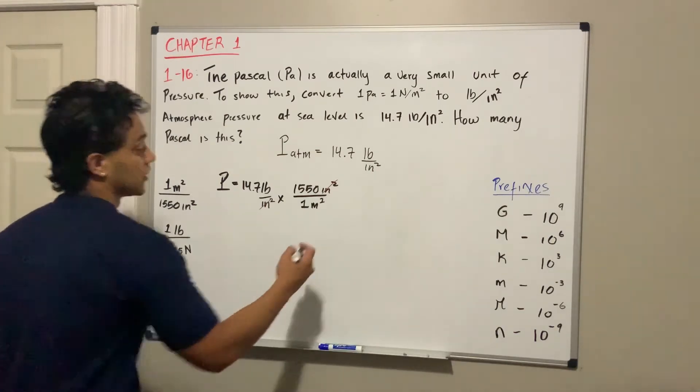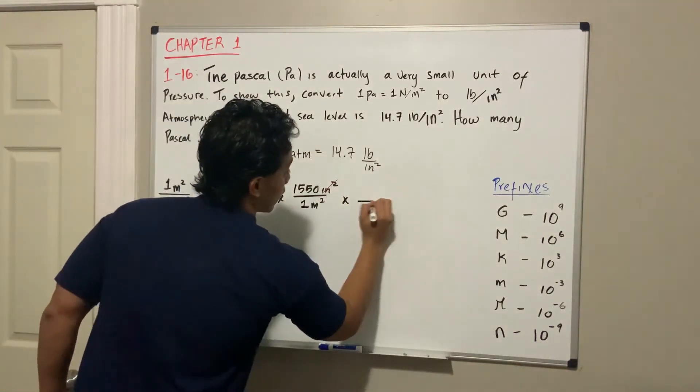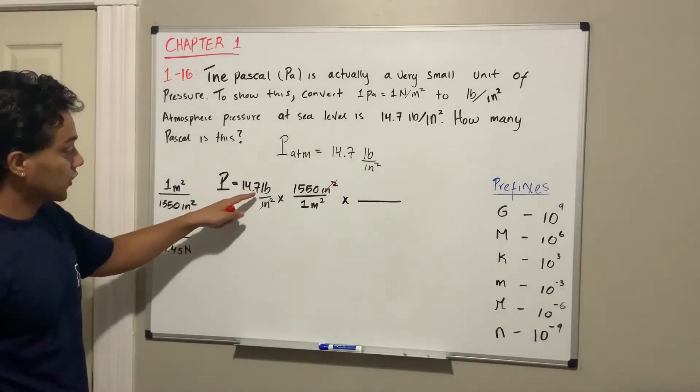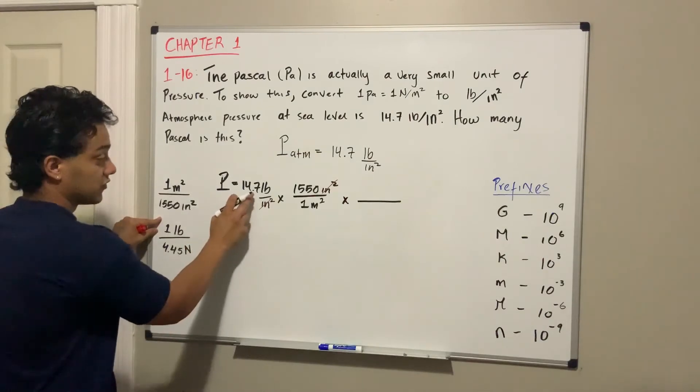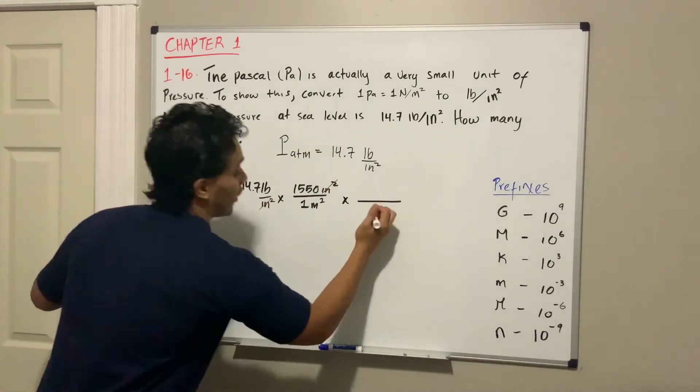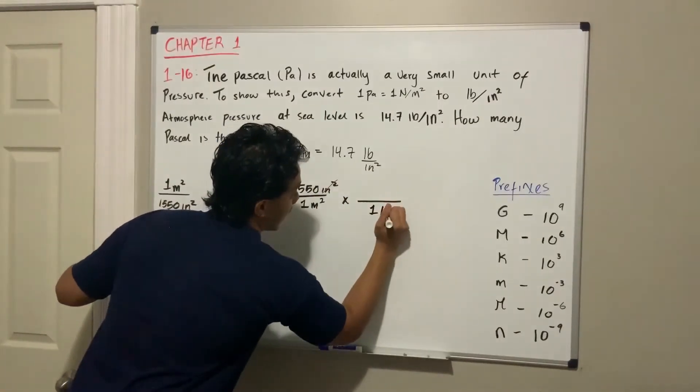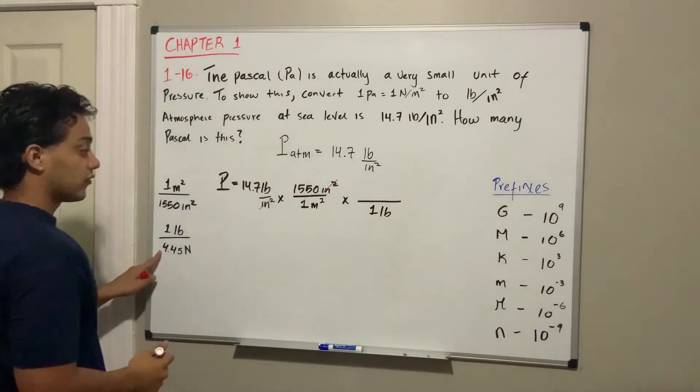After that, we're going to use our other conversion factor. We want to cancel pounds, so I'm going to put the pounds at the bottom. My pounds are on top, so I put my pounds at the bottom so I can cancel them all, and then I put the 4.45 Newtons on top.